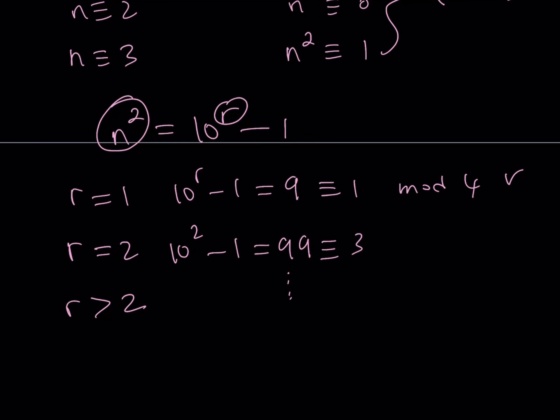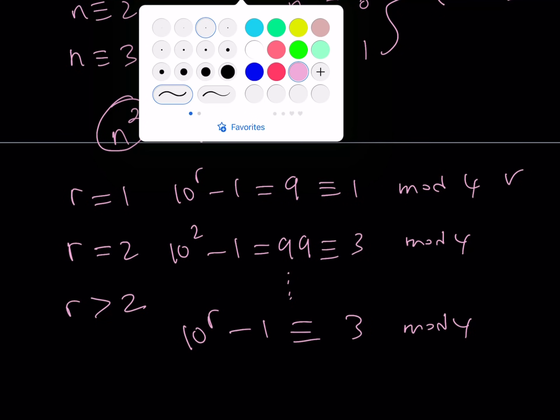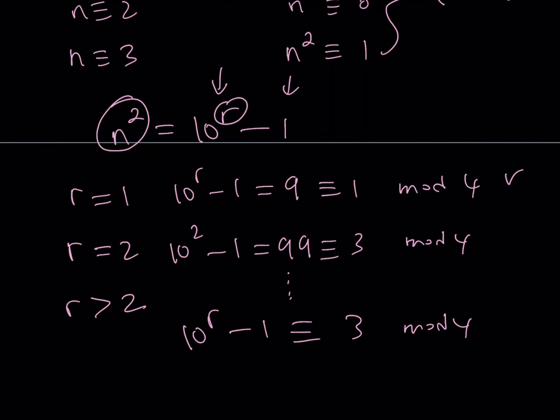10 to the power r minus one is always going to be three mod four. What is that supposed to mean? You have a three mod four minus one is going to be two mod four. But n squared can only be zero or one mod four, which means this equation has no other solutions. So let's go ahead and write it down. The only solution is n equals three.